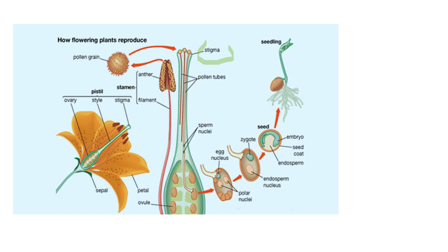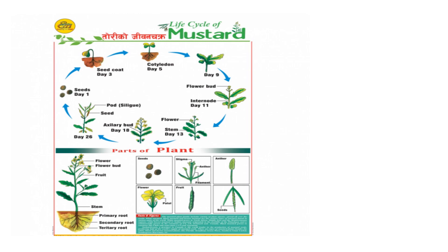The female portion is the stigma and the male portion produces pollen grains. The pollen tube carries the sperm nucleus to fertilize the ovule, forming a zygote, which becomes a seed and then a new plant through germination. This completes the mustard plant life cycle. In the life cycle chart: Day 1 the seed germinates, Day 3 early growth is seen, Day 5 shoot formation begins, followed by flowering, male and female part development, fertilization, and seed formation, completing the cycle.